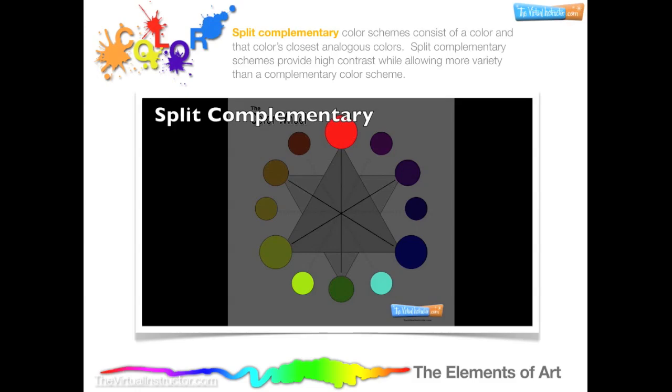A split complementary color scheme consists of a color and that color's closest analogous colors. Split complementary color schemes provide high contrast while allowing more variety than a complementary color scheme. An example is red, yellow-green, and blue-green.